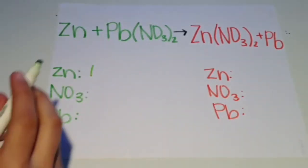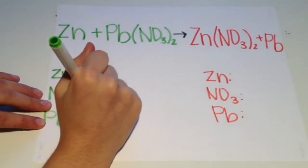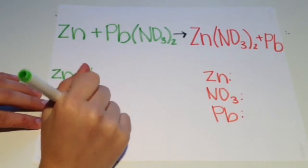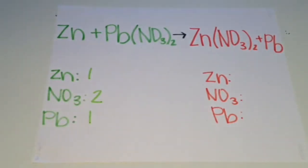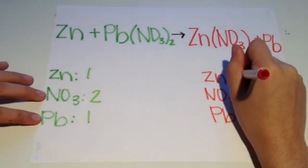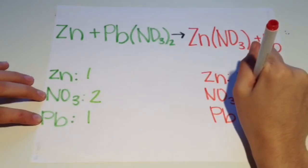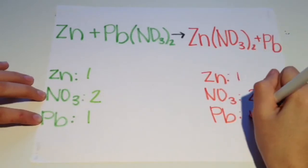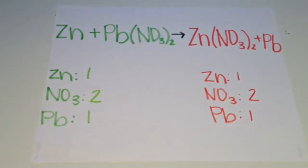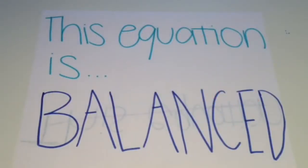There is one zinc atom on the reactant side, which is the left in green. There are two atoms of nitrate and one atom of lead. Then on the product side, there is one zinc atom and two nitrate atoms and one lead atom. As you can see, there are the same amount of each atom on both sides. This means that this equation is balanced.